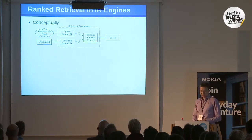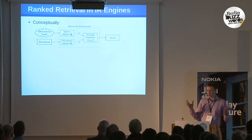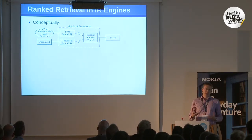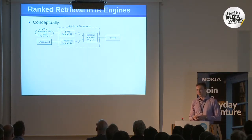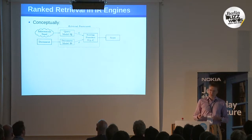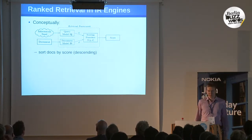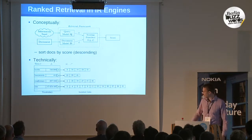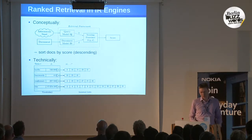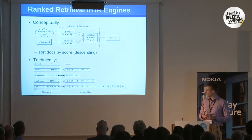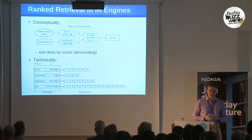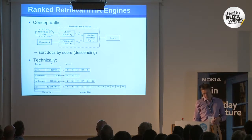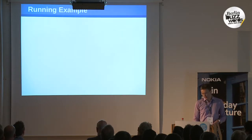Scoring in ranked retrieval engines is conceptually simple: you choose a retrieval model, it gives you a scoring function, and you feed document statistics into it. You represent documents and queries, execute the scoring function on each document in your collection, get a score for each, sort descending, and present the top results. To make that efficient, you use index structures — a dictionary with all terms, pointers to inverted lists containing postings with document numbers and term frequencies.